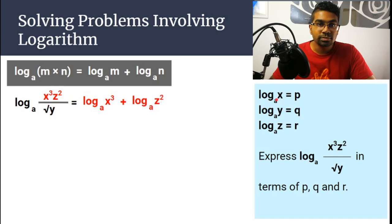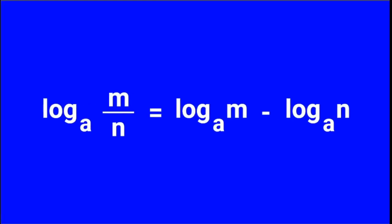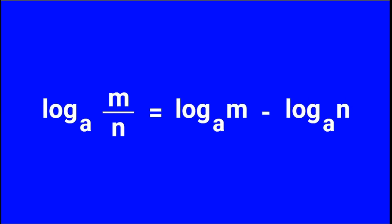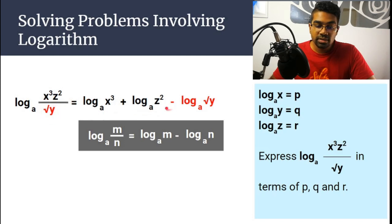Now the second rule. The second rule is when we have a division inside the log. So if it is log_a(m/n), then we can write it as log_a(m) - log_a(n). Here when we look at our question, this square root of y is at the denominator. So when we have something over square root y, then square root y can be written as minus log_a(√y).